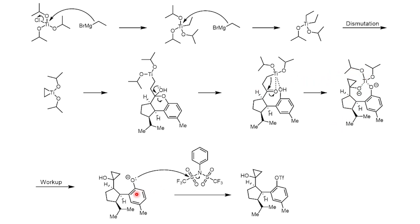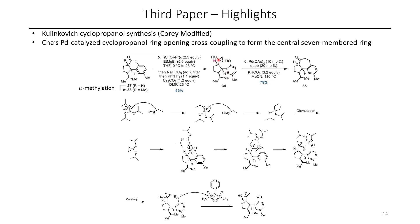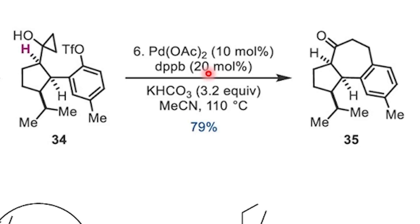After workup, bis-trifluorosulfonyl aniline is able to do a triflate transfer to form the aryl triflate. Once this cyclopropanol triflate is formed, palladium-catalyzed cyclopropanol ring-opening enables the formation of the seven-membered ring, which I thought was a really cool reaction — I hadn't seen this reaction before.